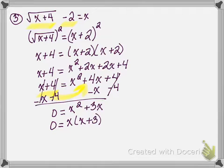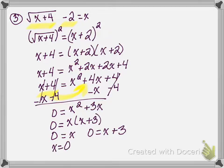To finish solving this quadratic, I set each factor equal to zero: 0 equals x, and 0 equals x plus 3. So the two values I have for x are 0 and negative 3.